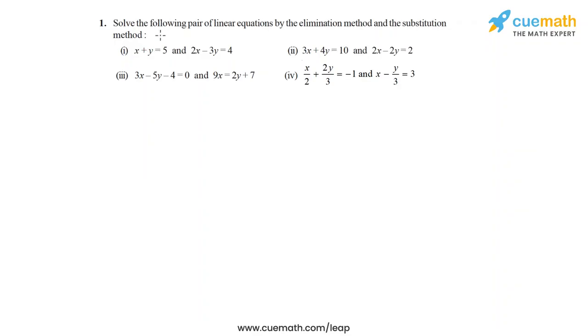The first question of this exercise says: solve the following pair of linear equations by the elimination method and the substitution method. We are given four pairs of linear equations, and for each pair we have to solve it using both elimination as well as substitution. Let's start with the first part: x plus y equal to 5, and 2x minus 3y equal to 4.